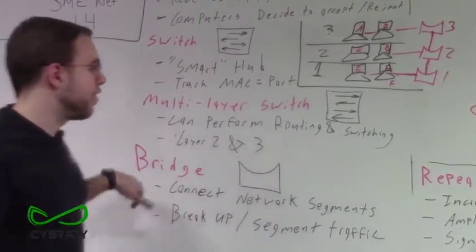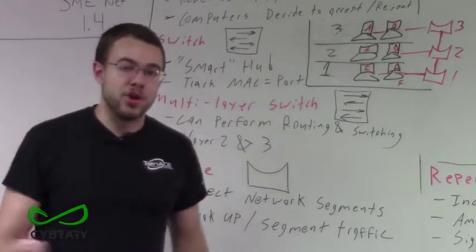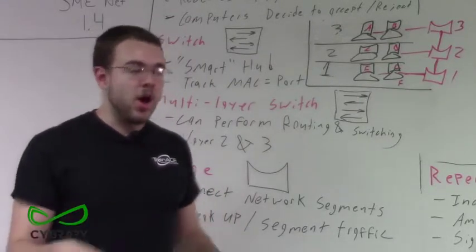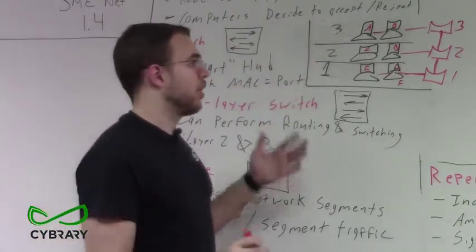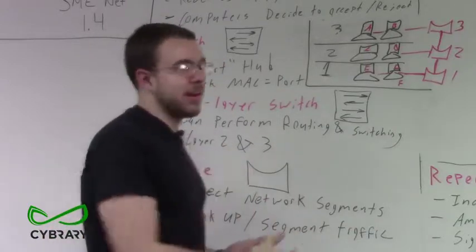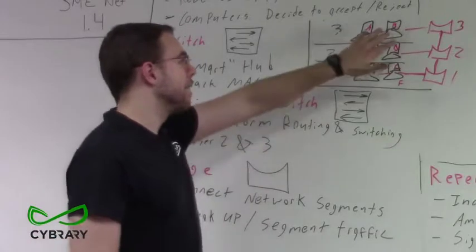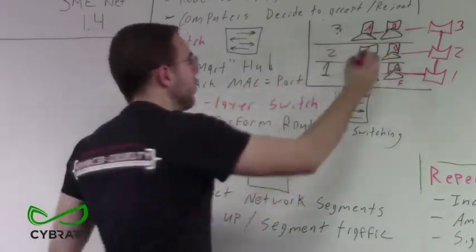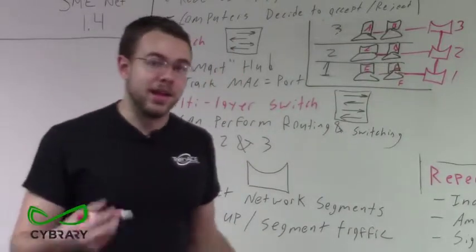Our bridges are not performing routing — they're not operating at Layer 3. They operate at Layer 2, the data link layer. They aren't inspecting IP addresses or routing data, but they do manage traffic by MAC addresses, performing at the data link layer.